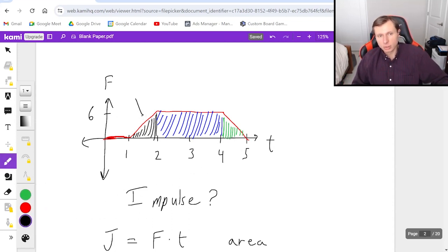Area of a triangle is one half base times height. So one half times the base of this triangle is two minus one, so just one, times the height six. That's going to be three for the area of the left triangle. Then for the blue rectangle, it's going to be base times height. The base is from two to four, so the base is only two. Height is six. So the area of that's going to be 12.